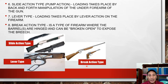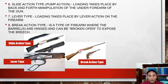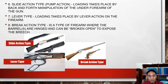Brake action type: a type of firearm where the barrel is hinged and can be broken open to expose the breech. For example, you break the barrel open — it pivots up — the cartridge case is removed, new ammunition is inserted, and the barrel is closed again. That is the brake action type — break it open, remove the cartridge, reload, and close.